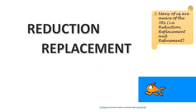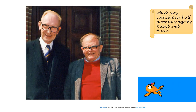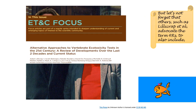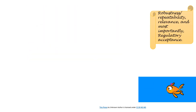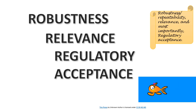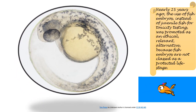Many of us are aware of the three R's — reduction, replacement, and refinement — which was coined over half a century ago by Russell and Burch. But let's not forget that others, such as Lily Cropp et al., advocate the term six R's, to also include robustness/repeatability, relevance, and most importantly, regulatory acceptance.